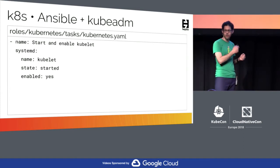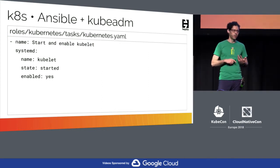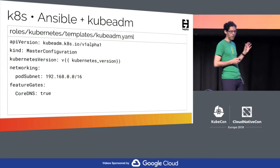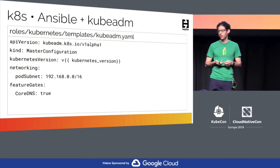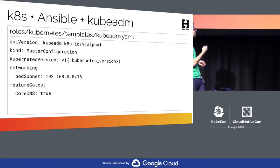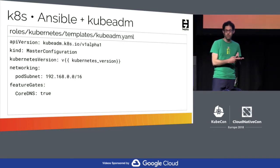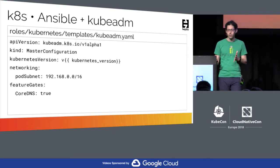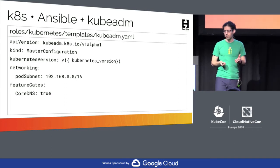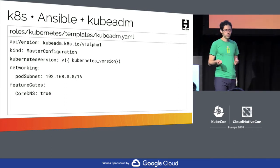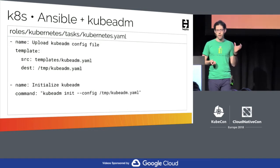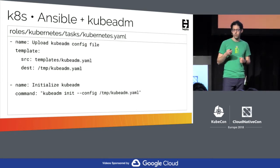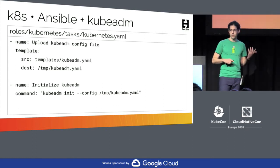Once I've got my packages installed, I can use systemd to get my kubelet started and make sure it's enabled so that if I reboot, it starts at boot time. Then we have a template for kubeadm — it's a template because I want to be able to change the Kubernetes version. There's a templating language that allows Ansible to take either my default value of 1.9.6, or a version of my choosing to override it. I also have a pod subnet for Calico and I've decided to use CoreDNS as well. Then I can run kubeadm init using that template file to get phase one of my cluster up and running.